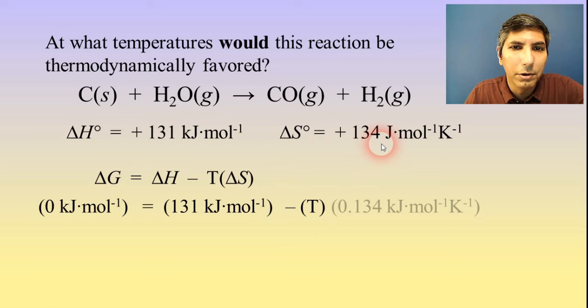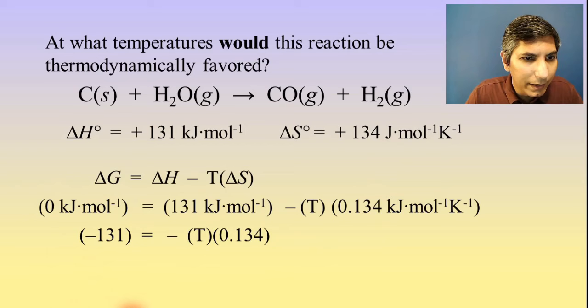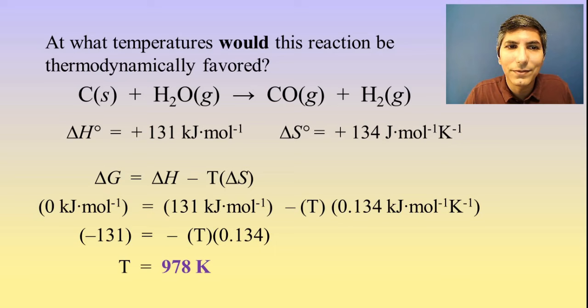And now I'm just solving for T. So I'm going to bring the 131 to the other side of the equal sign and divide both sides by negative 0.134. And when I do that, I find that the T equals 978 kelvins. So that's my threshold temperature.